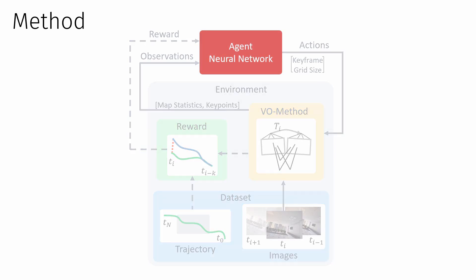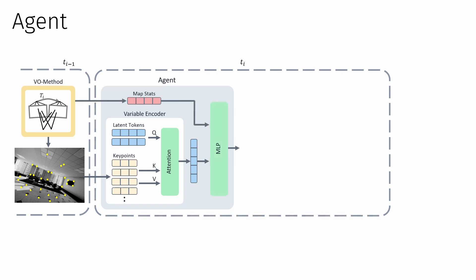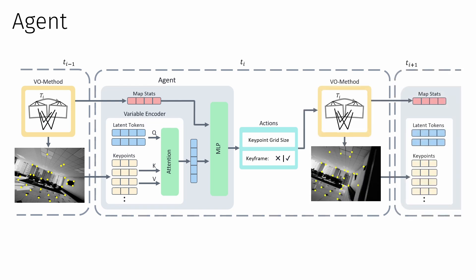The architecture of the agent network consists of a variable encoder, which takes the image coordinates and depth of the currently tracked keypoints as input. Since the number of tracked keypoints might vary between different timestamps, we employ an attention layer with learnt latent tokens to obtain a fixed dimensional feature vector. The resulting feature vector is further processed together with the map statistics. The agent network output represents the actions for the current grid size used to track features and the decision to trigger a keyframe or not. Both actions are then given to the VO method, which computes the pose and the map statistics for the next timestamp.